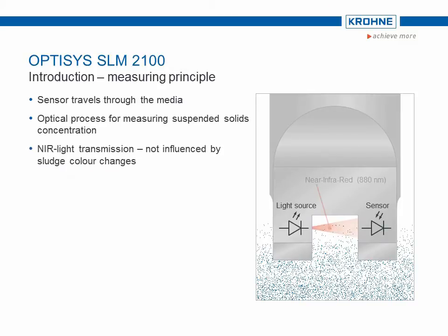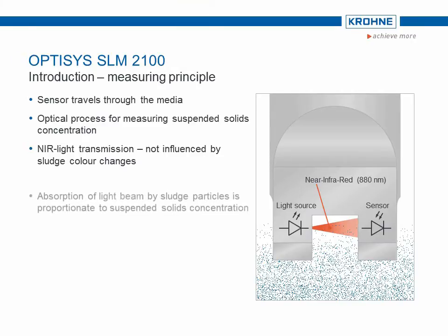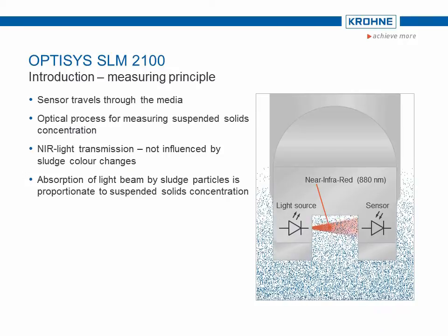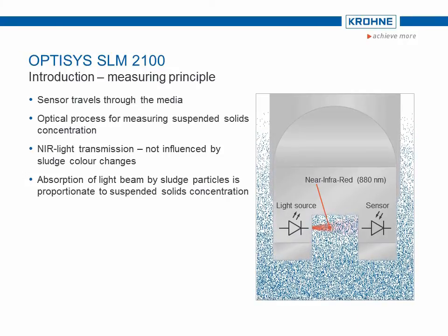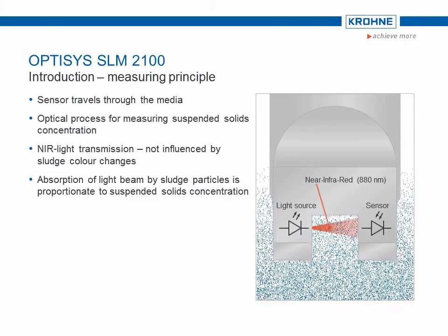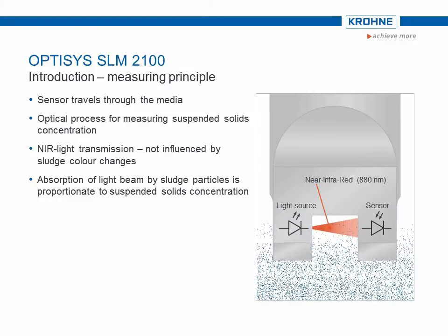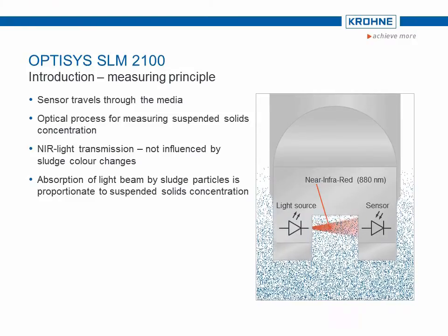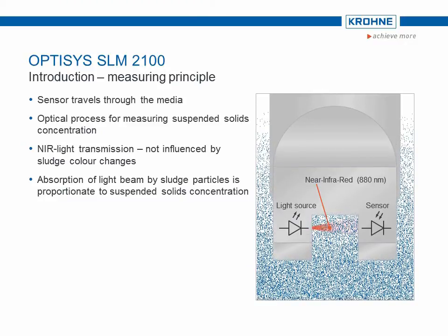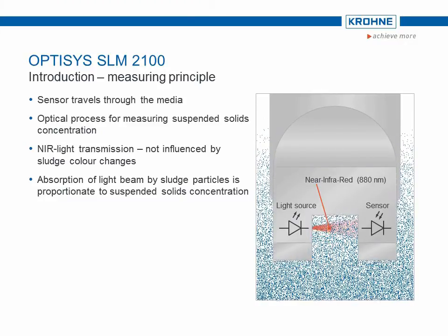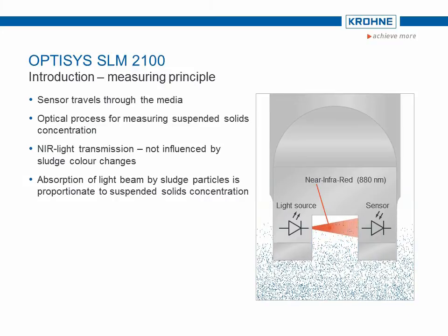The suspended solids concentration is measured using transmitted infrared light, which delivers precise measurements regardless of sludge colour changes. The medium to be measured is penetrated by a beam of light in the measuring gap of the sensor. The suspended solids and sludge particles absorb or reflect the light and thus weaken the intensity of the beam. The attenuation of energy between the light source side and the receiver side of the measuring gap correlates directly to the level of concentration of particles, which can then be easily calculated.